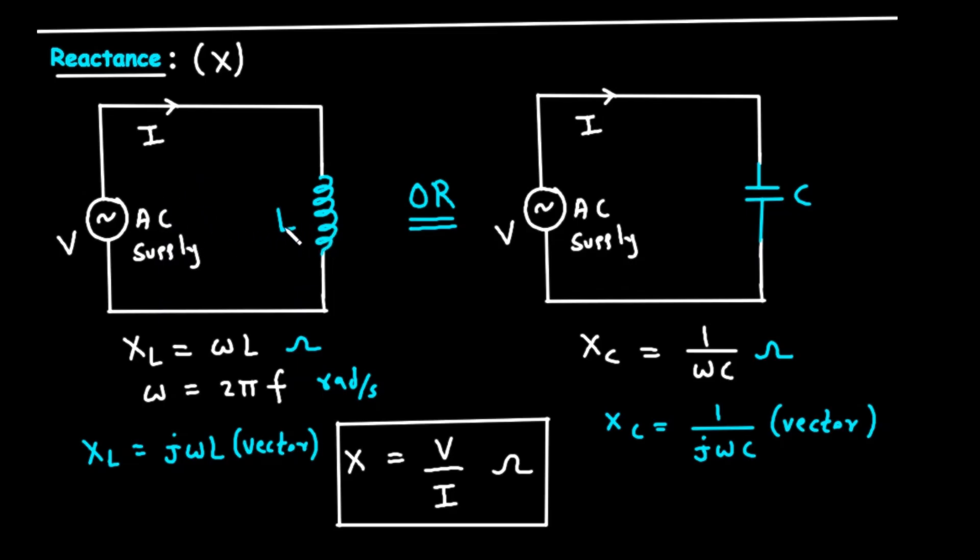The diagram shows our AC supply connected to a component that looks like a coil or a spring. This is the symbol for an inductor, labeled L. An inductor opposes any change in current. Since AC current is constantly changing, an inductor is always reacting to it.